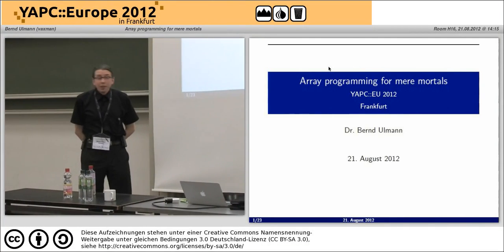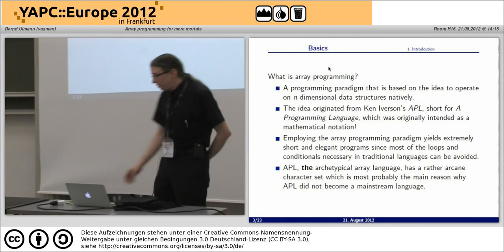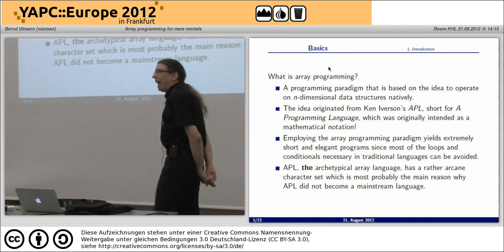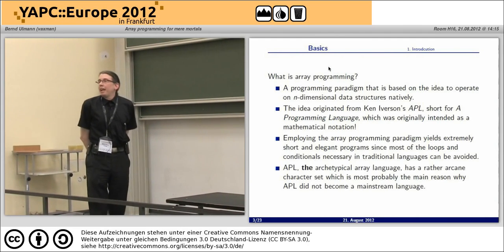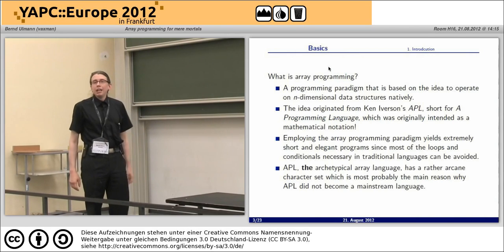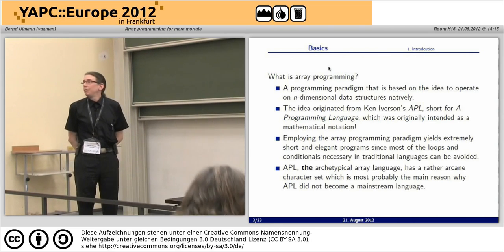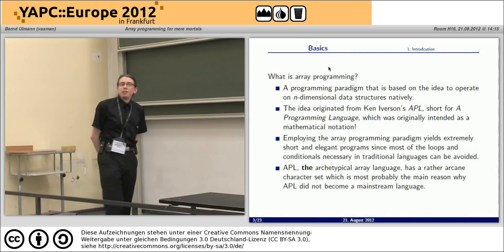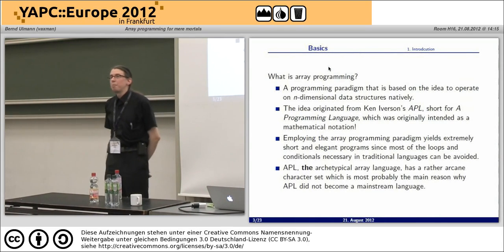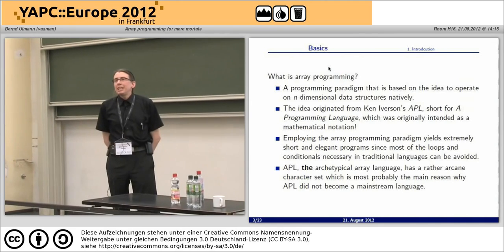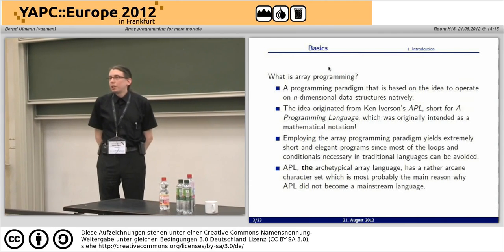Let's start with my talk: Array Programming for Mere Mortals. Array programming is a programming paradigm that is largely forgotten by now, which is a shame. The main array programming language you may have heard of is APL — A Programming Language — not a very inventive title. This was developed by Ken Iverson in the late 1950s. He tried to develop a new mathematical notation because he was not satisfied with what had been built over the centuries, and it turned out that his mathematical notation was a great vehicle to build a programming language upon.